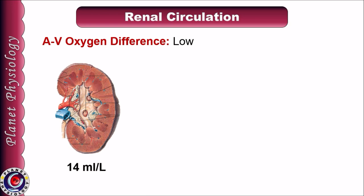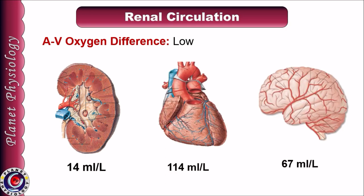Oxygen extraction by the kidney is low — just 14 ml from every 1 liter of blood. For comparison, the heart extracts the maximum oxygen and the brain extracts about 67 ml from every liter of blood. So oxygen extraction by the kidney is very low, in spite of very high blood flow to the kidney, because the main purpose of this high blood flow is filtration and not metabolic activities.